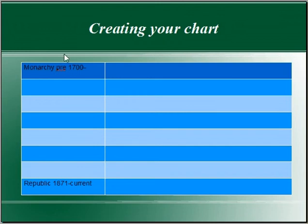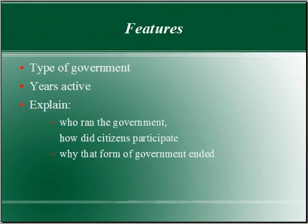So we're going to have the government type, the year, and then the explanation over here of what that government is. This is what your spreadsheet should include: type of government, the years it was active, and you'll need to explain who ran the government, how citizens participated, and why that form of government ended — what happened to it.